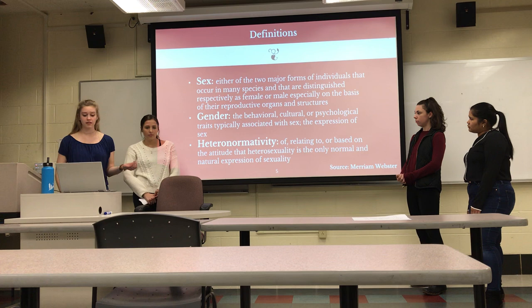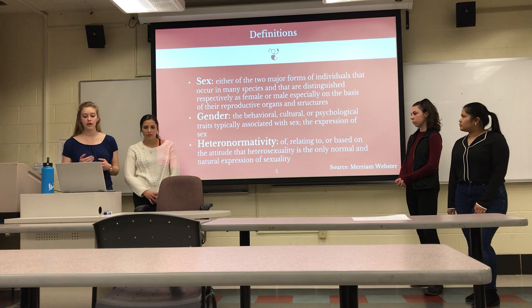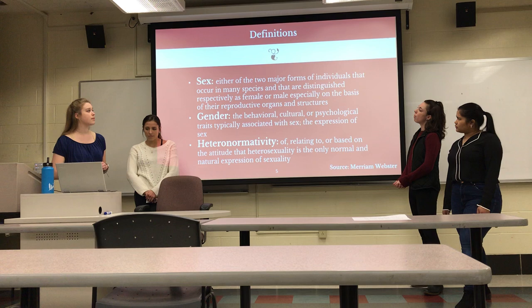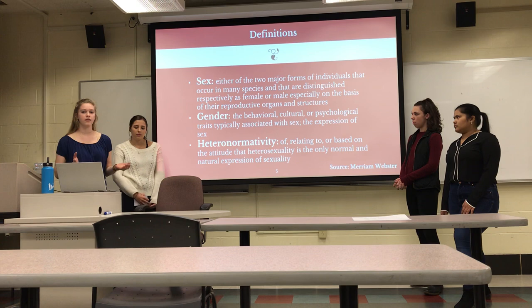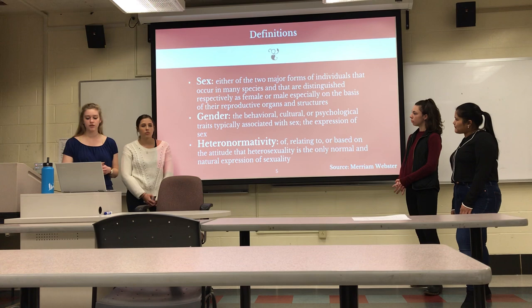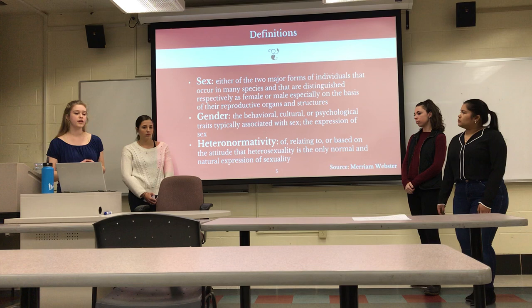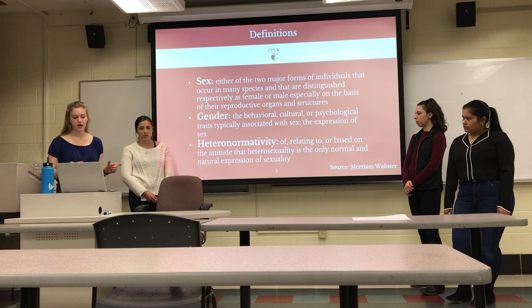Before we get into the full presentation, here are some key definitions. The first is sex — biological sex. Merriam-Webster defines sex as either of the two major forms of individuals that occur in many species, distinguished respectively as male or female, especially on the basis of their reproductive organs and structures. The dictionary itself establishes a binary — male or female — whereas science has shown things like intersex and an entire spectrum of biological sex not captured by just two binary options. Then there's gender, which Merriam-Webster defines as the behavioral, cultural, or psychological traits typically associated with sex or the expression of sex. You might identify someone's gender based on how they express it — feminine traits, feminine clothing, masculine traits — so it's not the biological aspect, it's the expression.